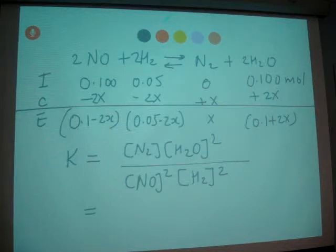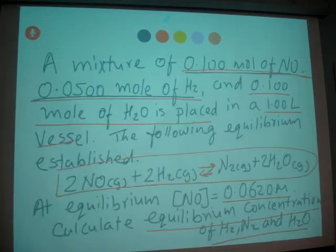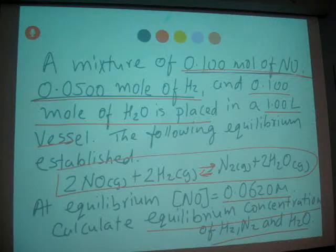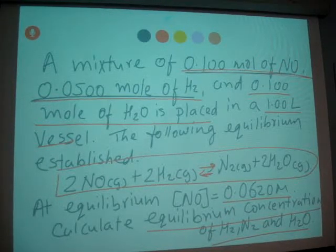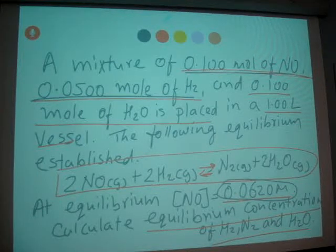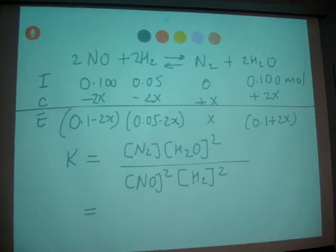Let's see. At equilibrium, which concentration is given? We have given NO concentration, 0.062 molar. Alright, fantastic. So we have NO concentration which is given. So when we solve this one, we have 0.1 minus 2X equals 0.062. That's the one given.